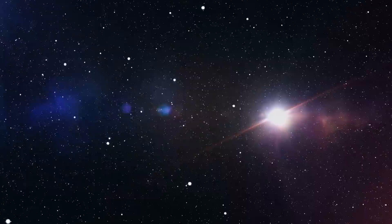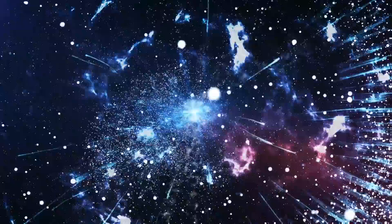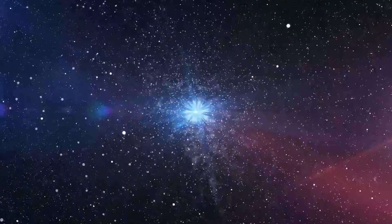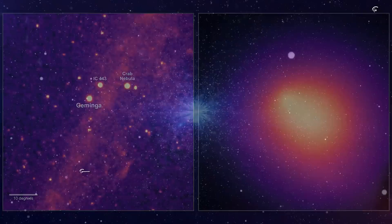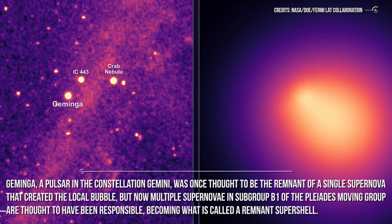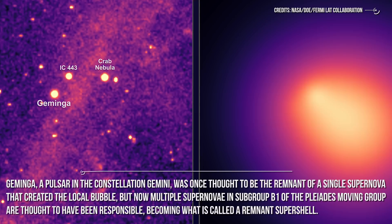What we think about these bubbles in the universe is that their exceptionally sparse gas, as we see for example in our local bubble, is indeed the result of supernovae that exploded within the past 10 to 20 million years. The gas remains in an excited state, in the X-ray band. Geminga, a pulsar in the constellation Gemini, was once thought to be the remnant of a single supernova that created the local bubble. But now multiple supernovae in subgroup B1 of the Pleiades moving group are thought to have been responsible, becoming what is called Remnant Supershell.